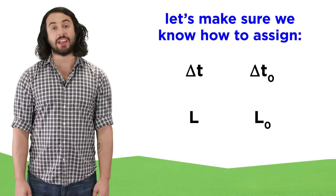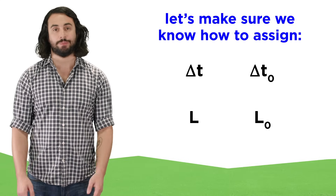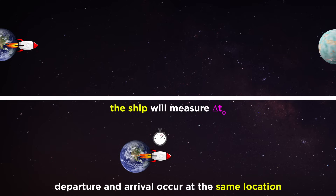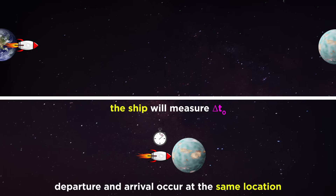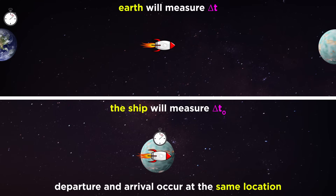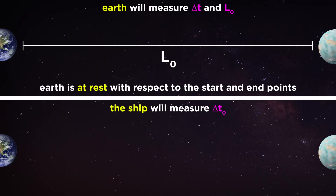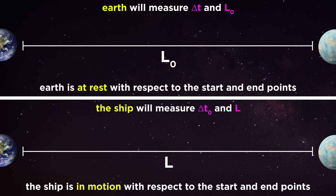At this point, let's take a moment to make sure we understand how to assign delta-T and L values. Delta-T-zero is the proper time interval — the time interval measured by the inertial reference frame where the two events occur in the same location. For a space journey, that's the spaceship, because the Earth leaves and the destination arrives while the ship goes nowhere. Everyone else, like someone on Earth, will register a longer time interval, delta-T, for this journey. L-zero, the proper length, however, is the length measured by an observer at rest with respect to the objects in question, like the earthbound observer in this case. Anyone in motion with respect to the objects, like the person on the spaceship, will register some shorter length for this distance, L.